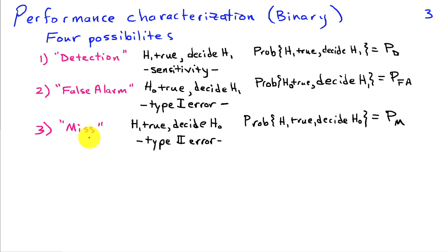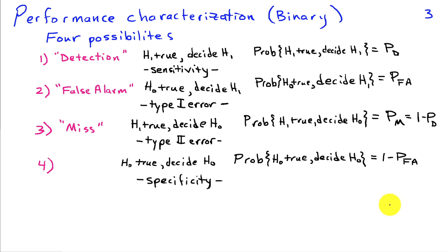The third possibility is what's called a miss: H1 is true but we decide H0. The probability of a miss is the probability that we decide H0 when H1 is true. In the aircraft scenario, the aircraft really is coming but we decide there's none coming and we missed it. The statistics community refers to this as a type 2 error. The fourth category is when H0 is true and we decide H0. The probability of this is 1 minus the probability of false alarm, and in the medical community this is known as the specificity of a test.